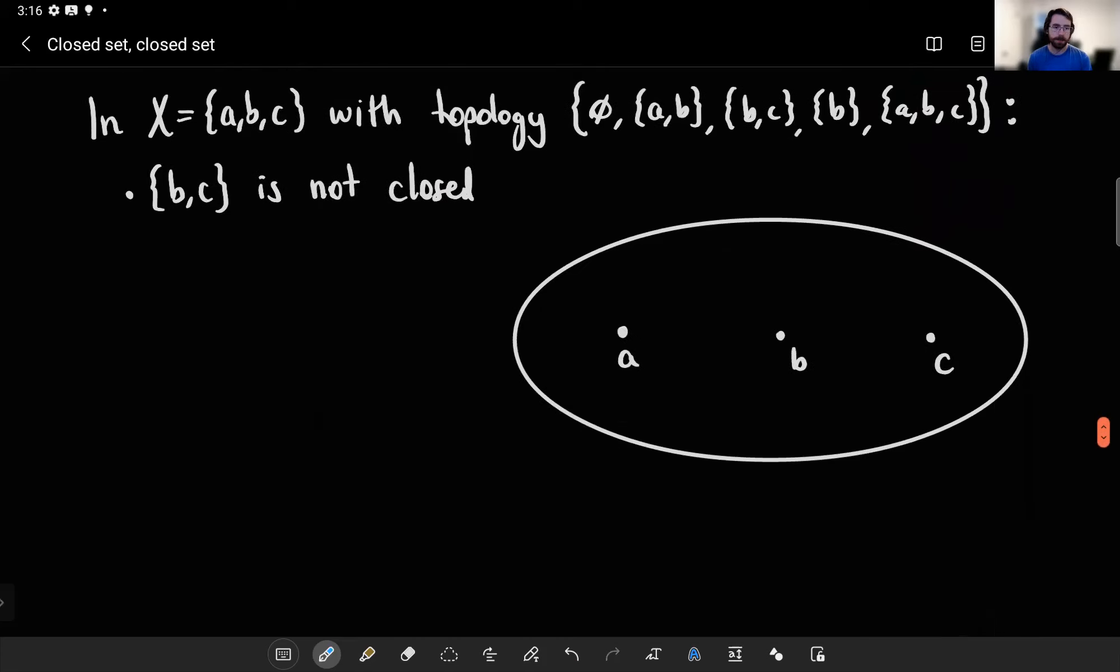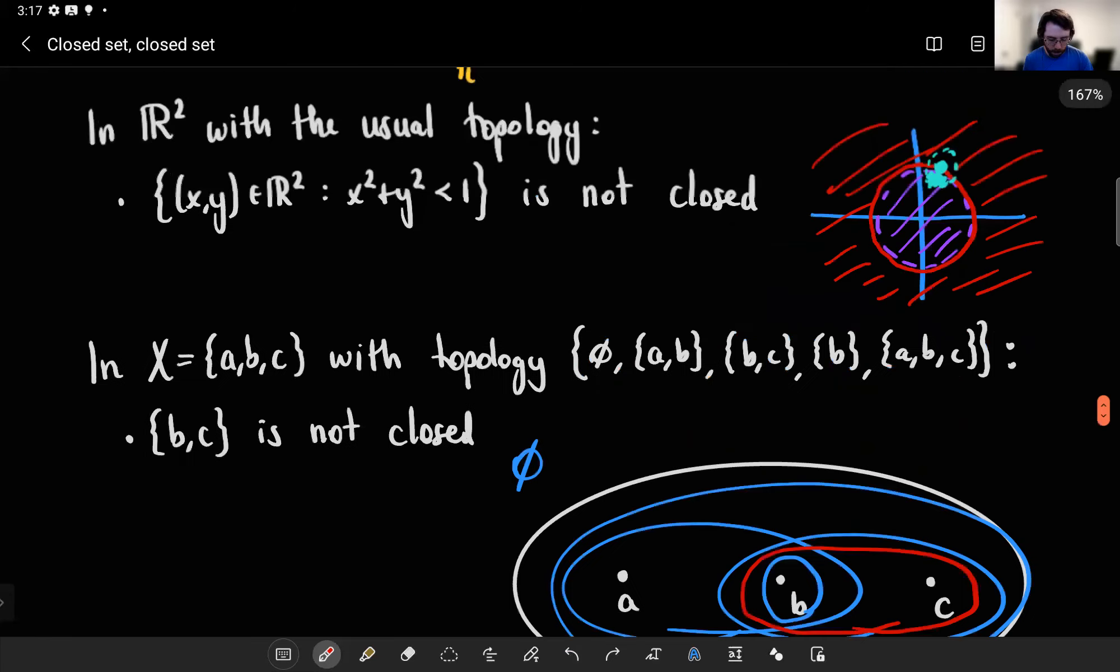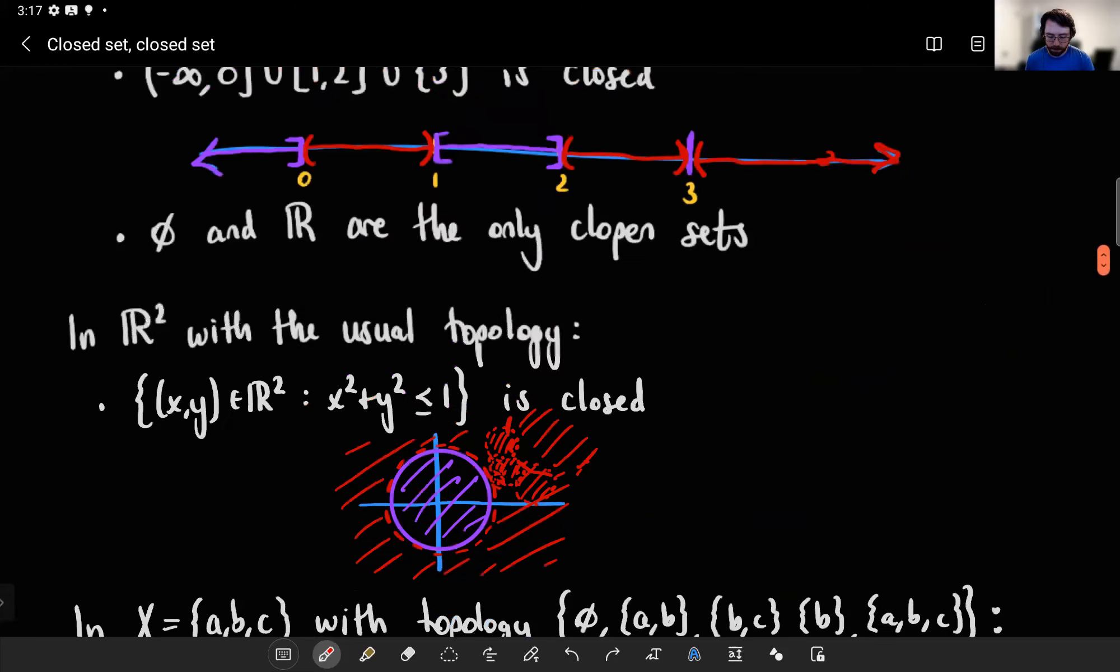And of course we could go back to our weird three-point space and say, if these were our open sets - so let me just draw them again - those are your open sets. And the set containing B and C, well that doesn't end up being a closed set because its complement is not an open set, right? The singleton A is not listed here as an open set, so it can't be open, meaning that set is not closed.